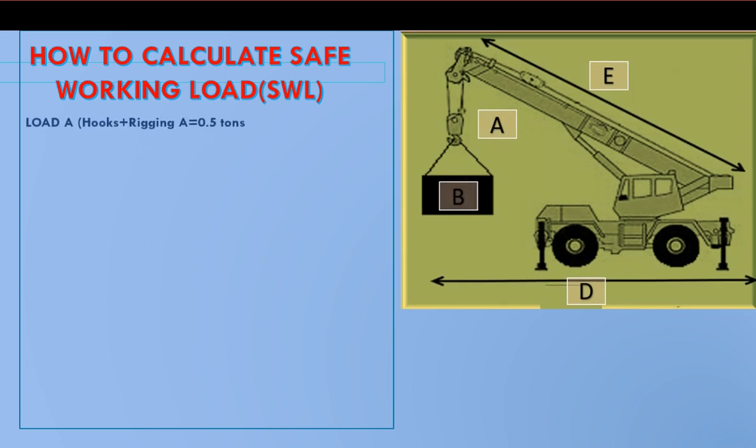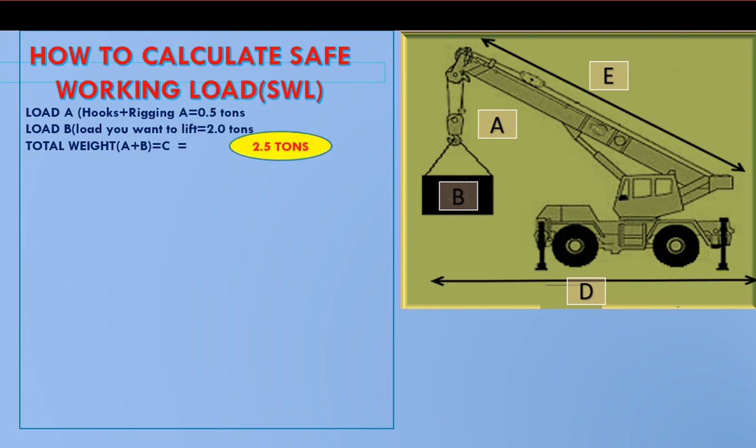How to calculate safe working load? Load A includes hooks, rigging equipment, and rigging accessories, equal to 0.5 tons. The actual load we want to lift is Load B, equal to 2.0 tons. Total weight A plus B equals 2.5 tons. This is the actual load we are going to lift.